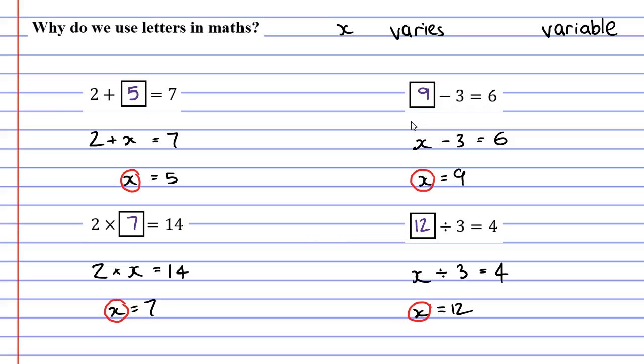It's called a variable because it varies or changes each time. Another word we use to describe the letters we use in maths is a pronumeral. In fact, we don't refer to them as letters. We either refer to them as a variable or a pronumeral. Letters is a word we use for the subject of English, whereas in maths we say variable or pronumeral.